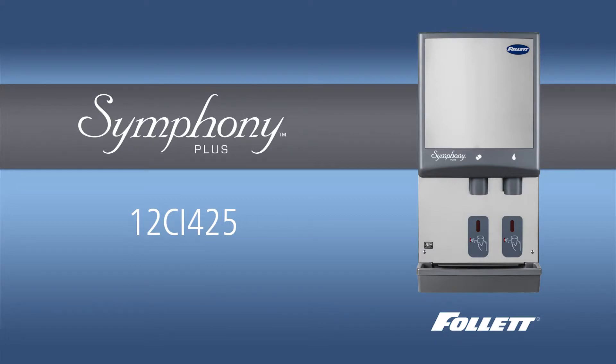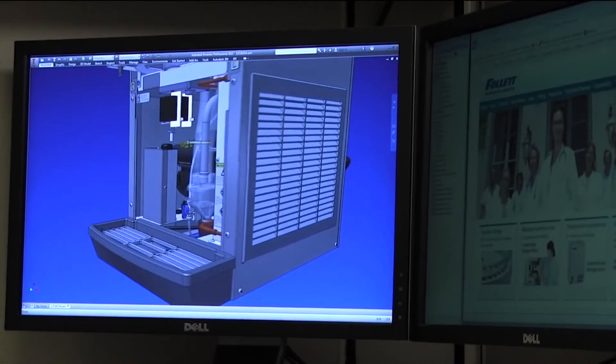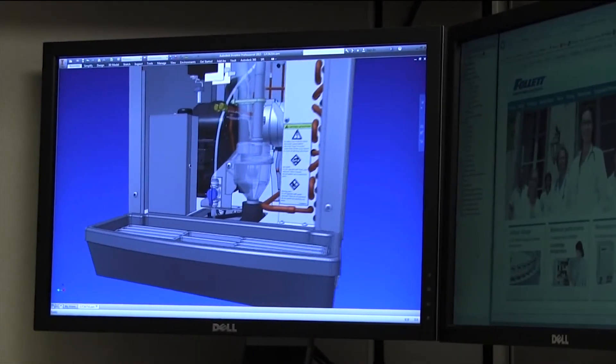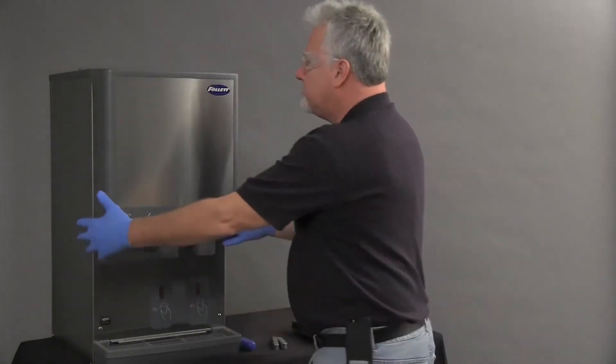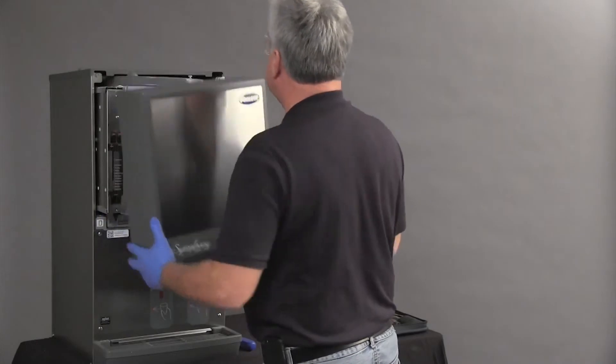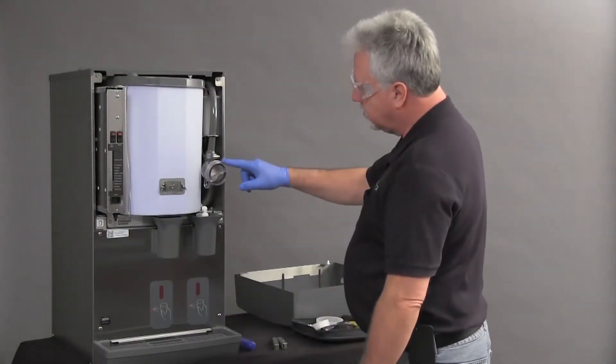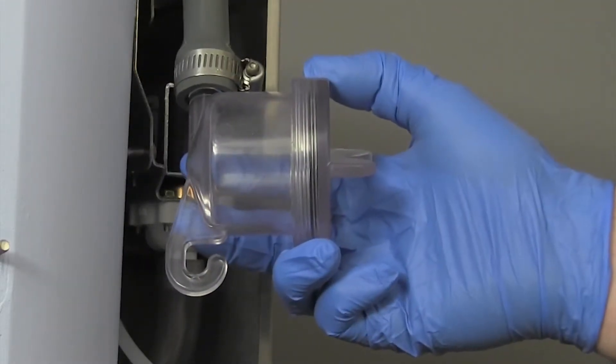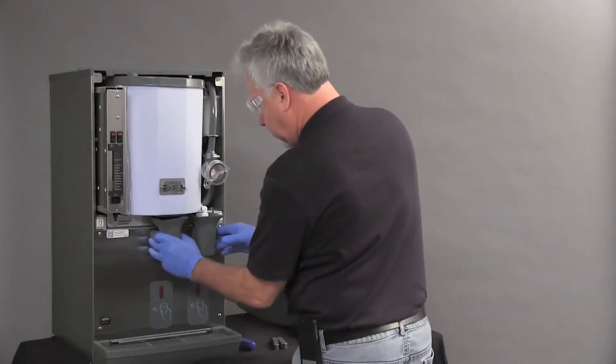Although the cleaning procedure is the same, some of the parts are designed differently in the compact 12 series dispenser. We will show how to disassemble the unit and locate the key components required for cleaning. The cover is removed by pulling out at the bottom and lifting up to disengage. The cleaning cup and water reservoir are located on the right side of the cabinet. Turn off the bin signal switch. Remove the dispense chutes.